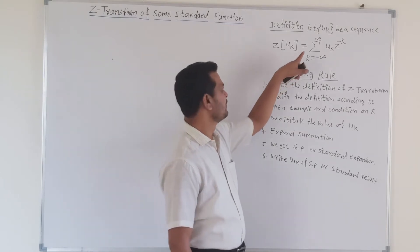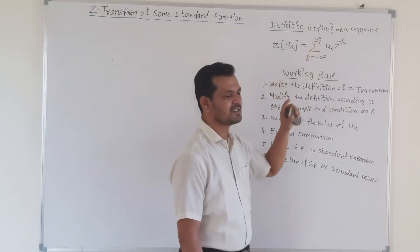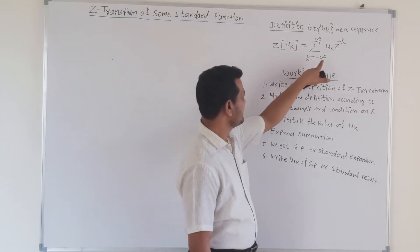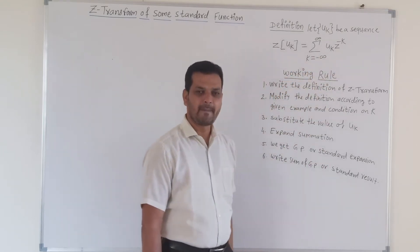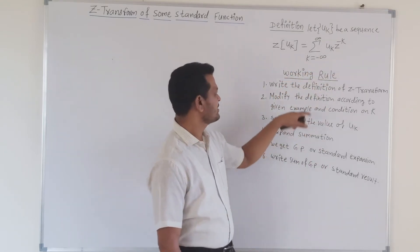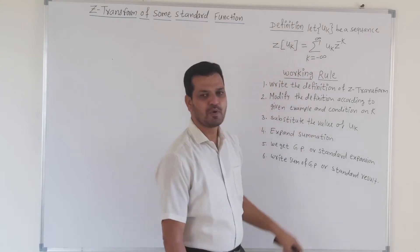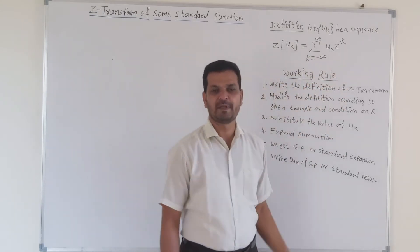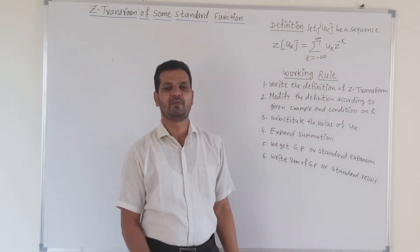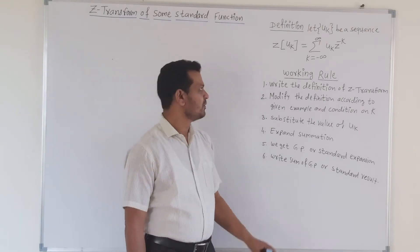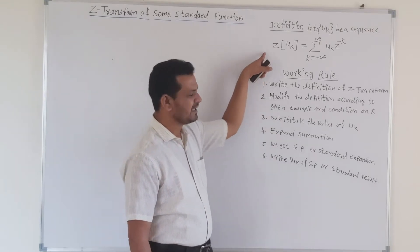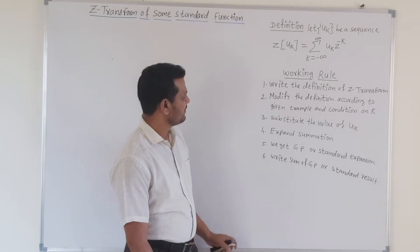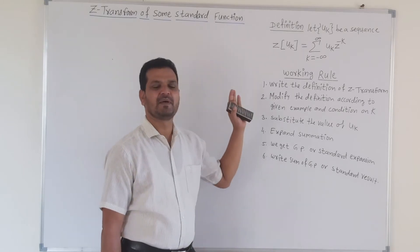Friends, we know that if u_k be a sequence, then its Z-transformation is given by the summation of u_k times z raised to minus k, where k starts from minus infinity to plus infinity. Here z denotes the complex number of the form x plus i·y. This is the simple definition of Z-transformation.